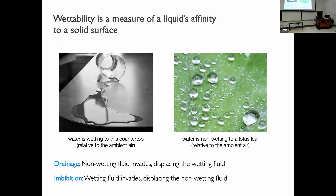The main focus of my talk today is wettability effects. Wettability is a measure of a liquid's affinity to a solid surface. On the left, water is wetting to a countertop and spreads into a thin film — the water likes the solid. On the right, water is non-wetting to a lotus leaf and beads into a spherical shape. In hydrogeology and petroleum engineering, drainage refers to when a non-wetting fluid invades and displaces a wetting fluid, while imbibition means the wetting fluid invades and displaces a non-wetting fluid.